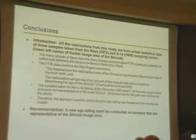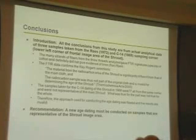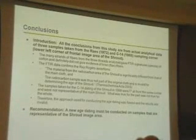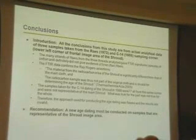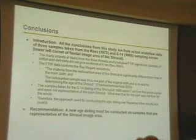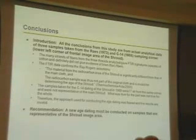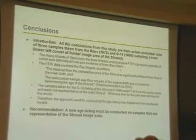All the conclusions from this study are from actual analytical data of three samples taken from the rays: 1973 and carbon-14, 1988 sampling corner, lower left corner, and a frontal image area of the shroud. The many strands of fibers from the three threads analyzed gave FTIR signature spectra of cotton and definitely did not give evidence of linen flax fibers.